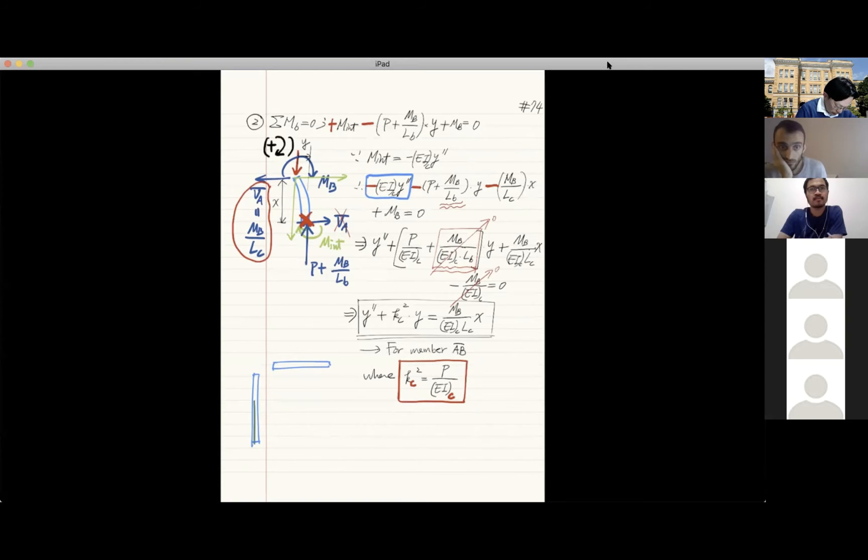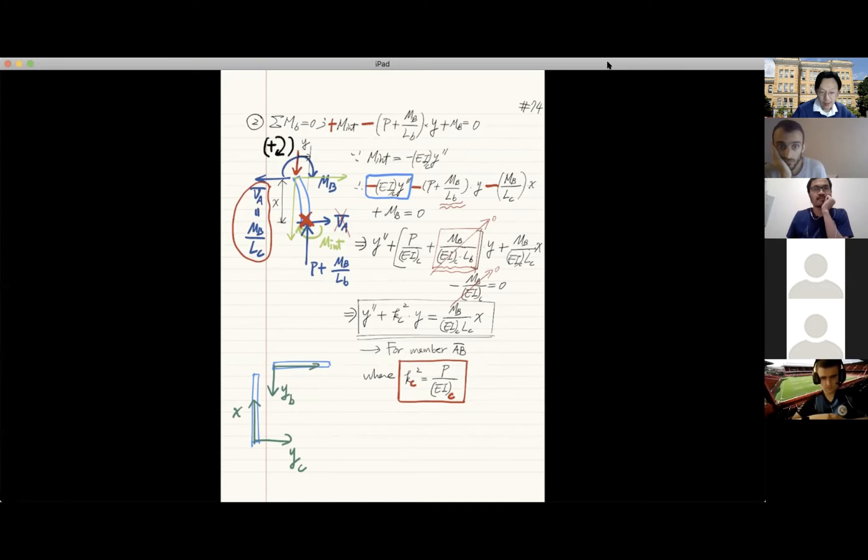And that means this reference system is measured like this. So one of them, this is Yc and this is Yb, and this is x of course. On the textbook it further defines Xc and Xb, but the regions are different. And that's why for Yc when Xc equals Lb, that is the beginning of the beam.